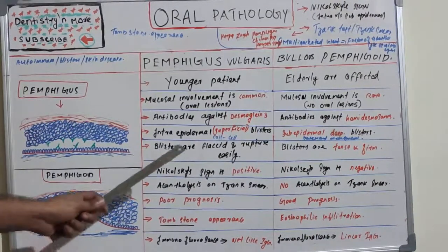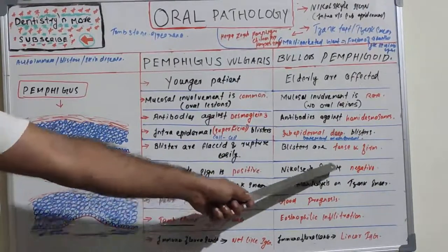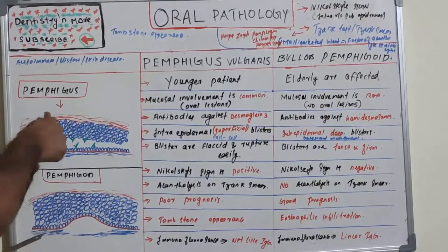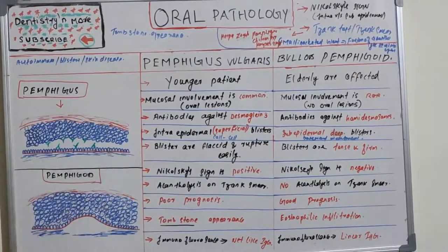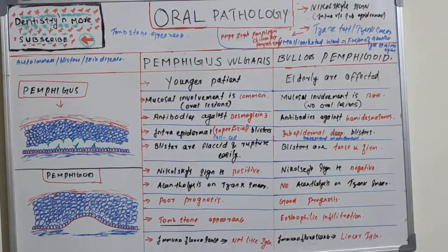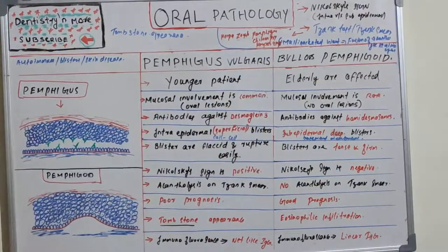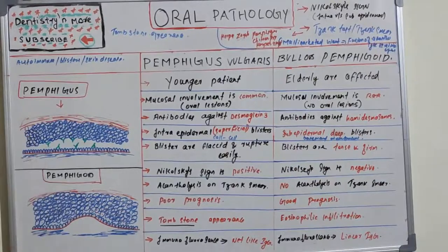That's why Nikolski sign is positive in pemphigus and negative in pemphigoid. Nikolski sign, put forward by scientist Nikolski, means that when we apply lateral pressure or a shearing force, the skin ruptures. This happens when there is a superficial or intra-epidermal blister or acantholysis. It is not seen in bullous pemphigoid because it has a very deep lesion with a thick epidermis above the blister, so lateral pressure does not cause rupture.